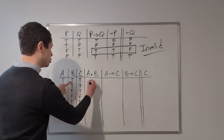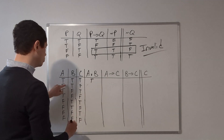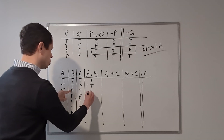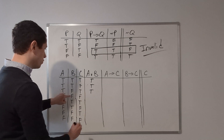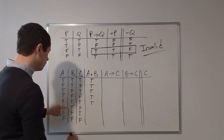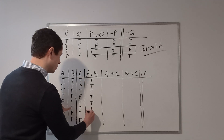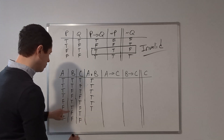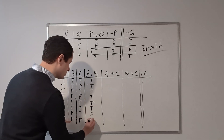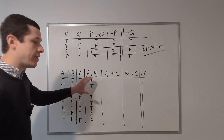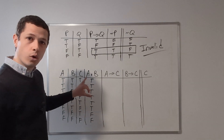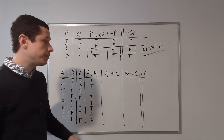The disjunction is for A and B. Running down the truth values: true or true is true; true or true is true; true or false is true; true or false is true; false or true is true; false or true is true; false or false is false; false or false is false. That covers every possible combination of truth values for A or B.